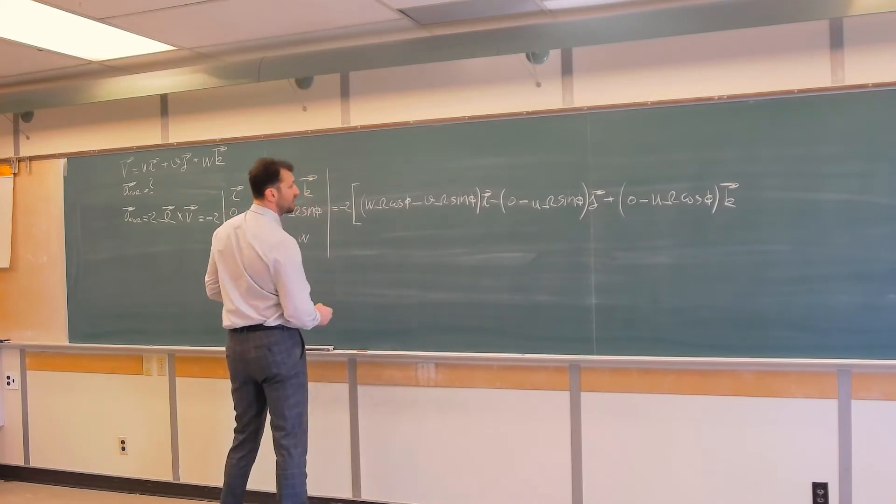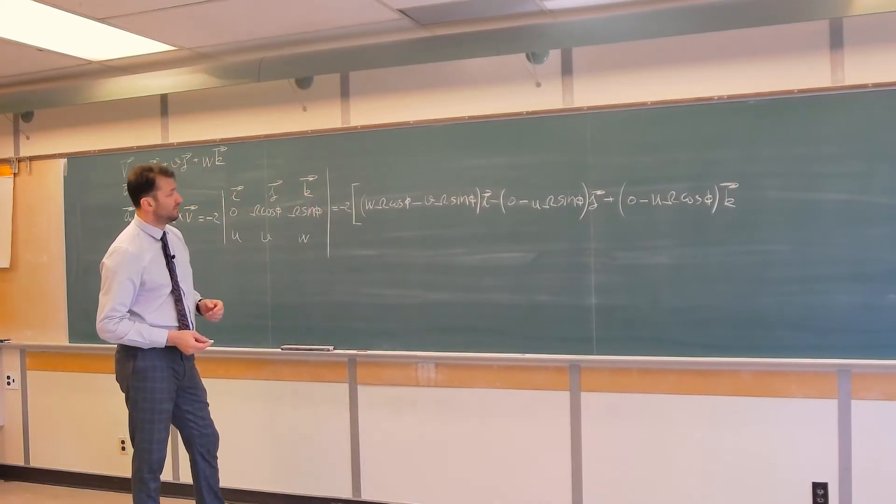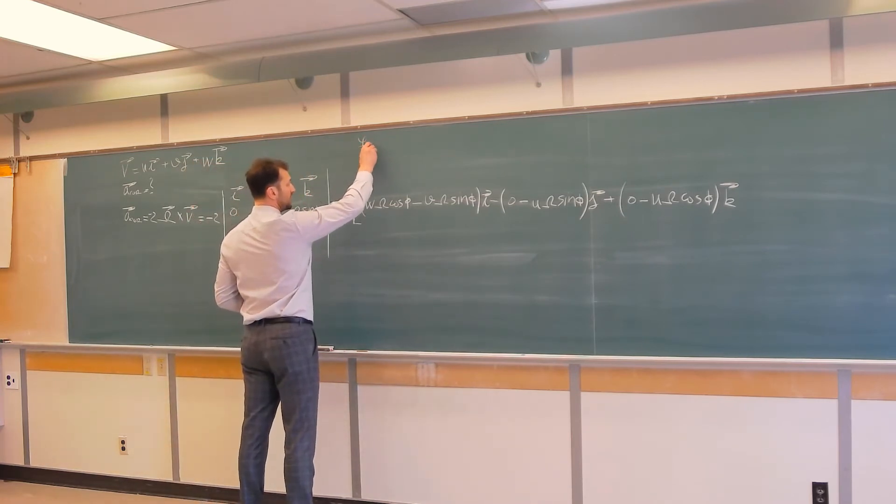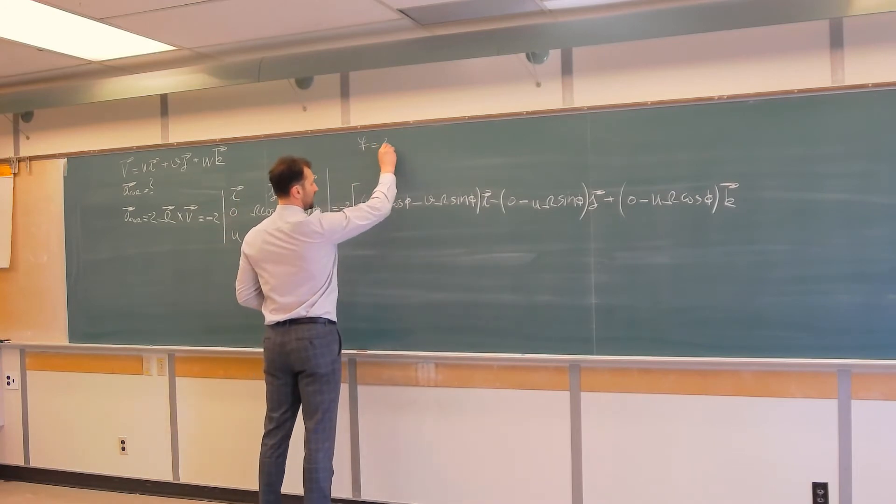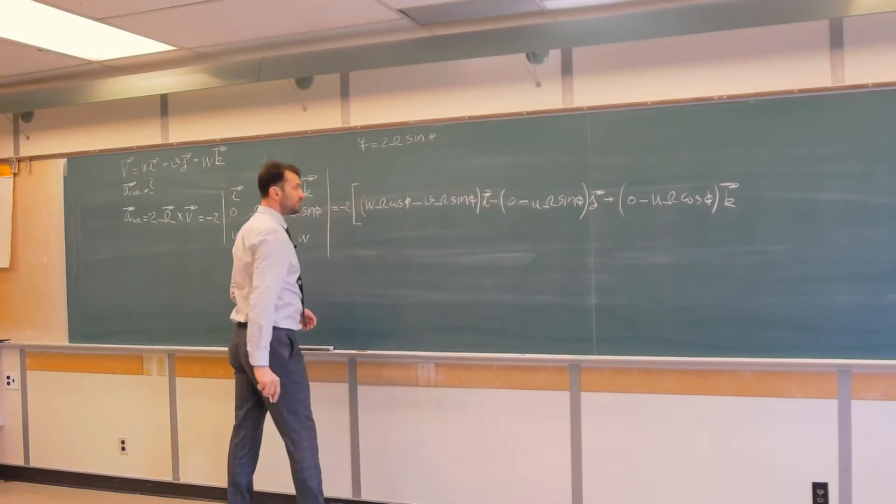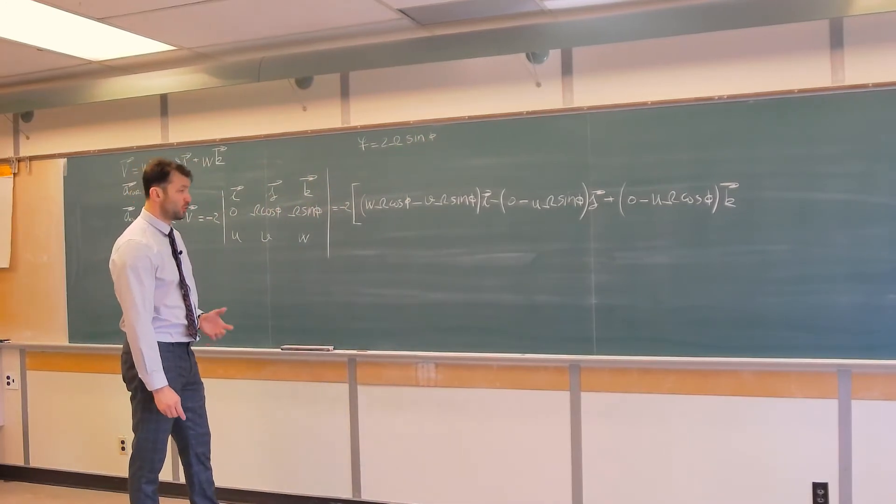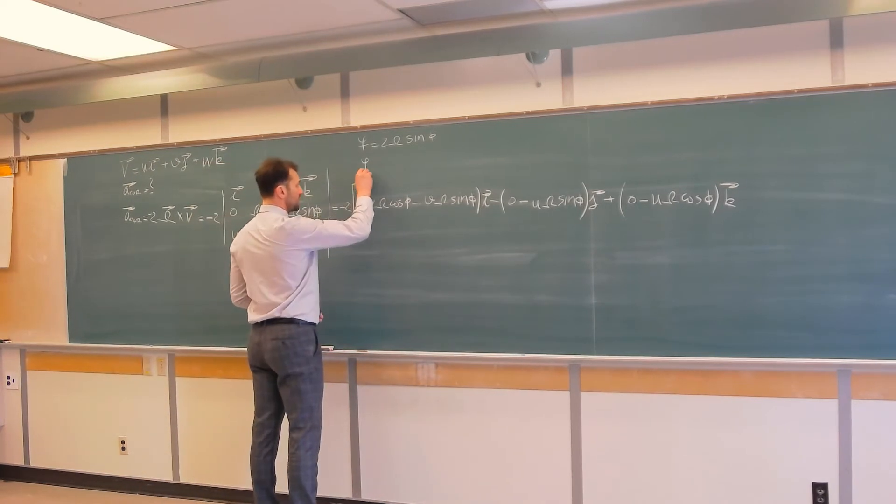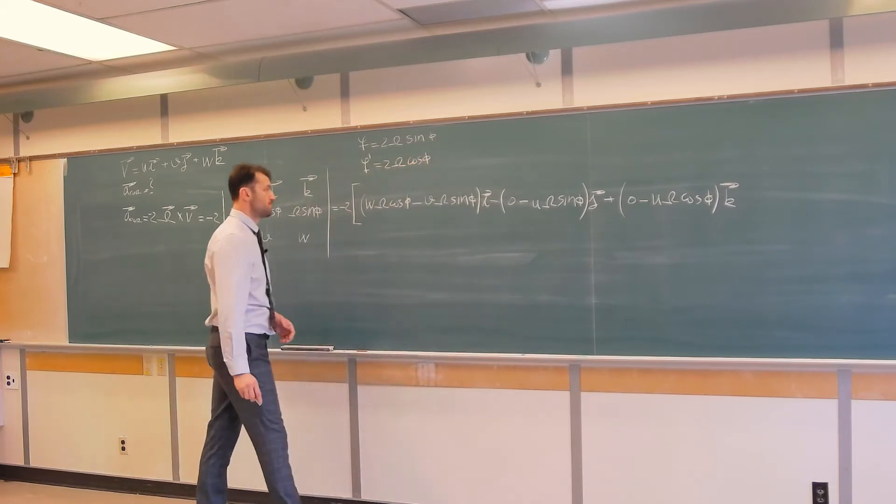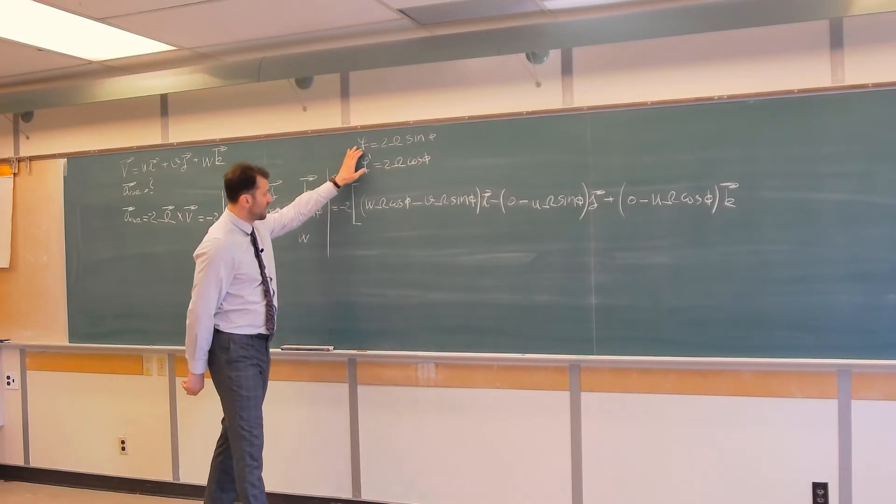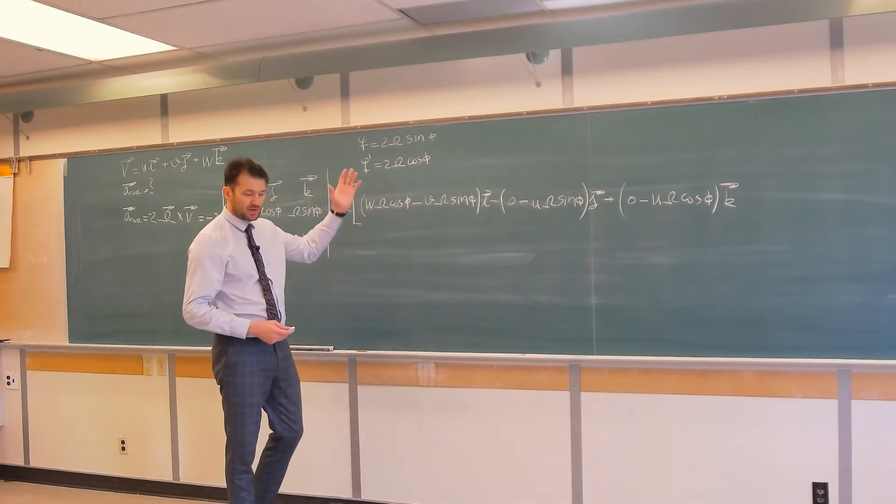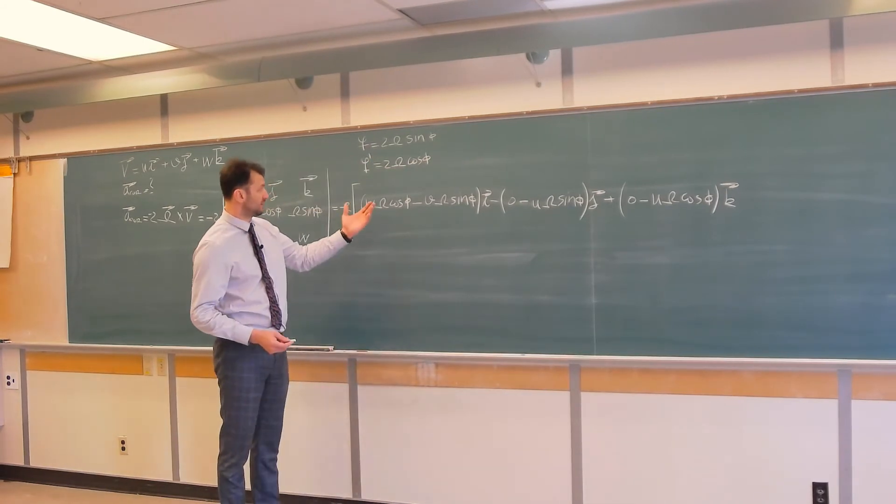Well in principle we could stop here but of course we need to just make this expression a little bit nicer so to speak. So we introduced these classical substitutions that F is 2 omega cosine phi. You will notice that Coriolis parameter is negative in the southern hemisphere. I have a problem in this series that demonstrates that explicitly.